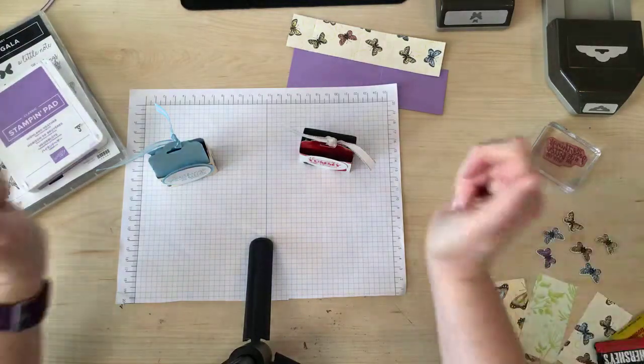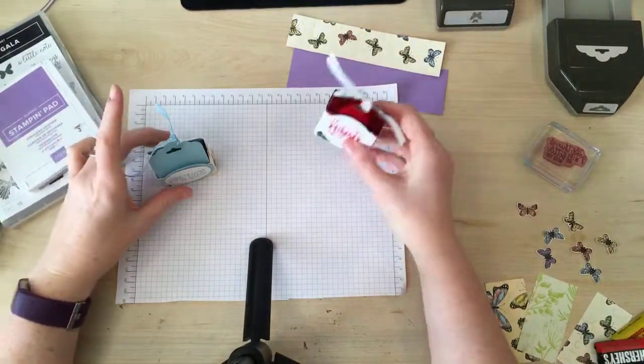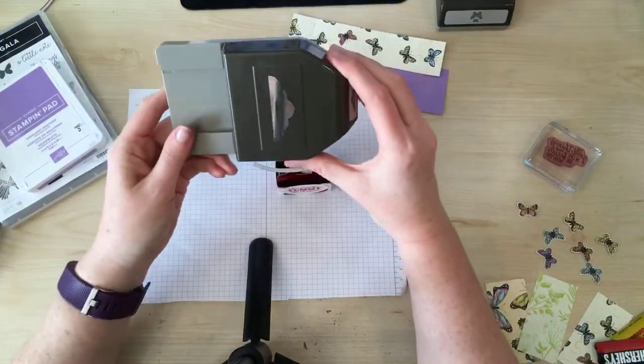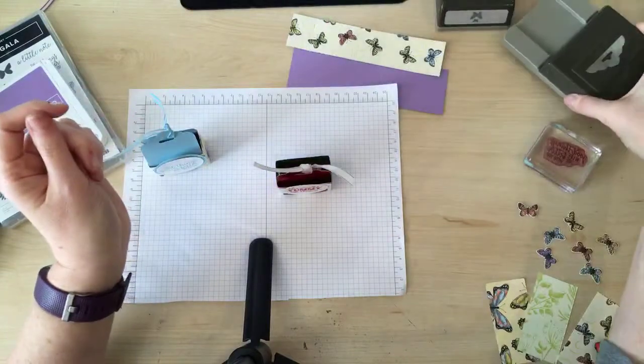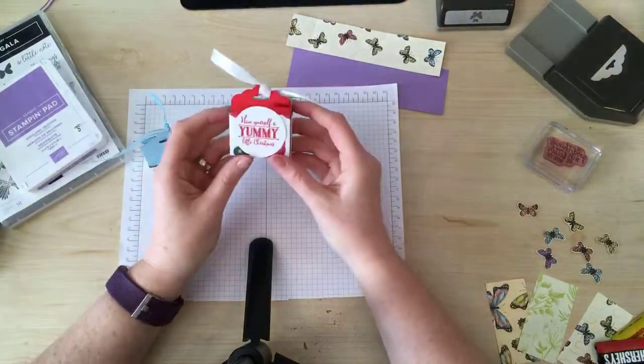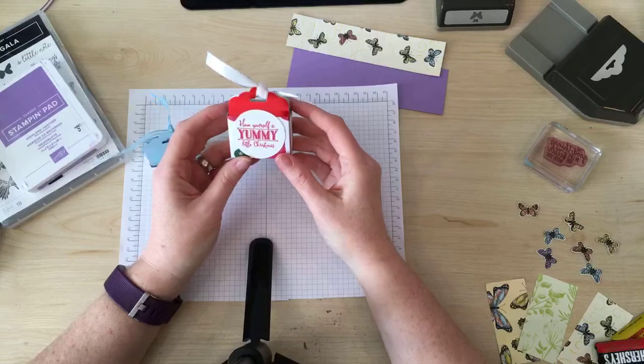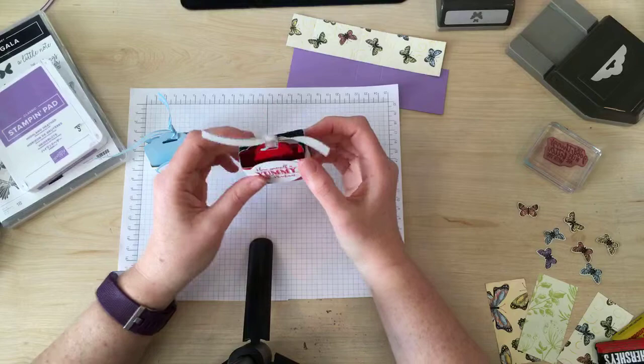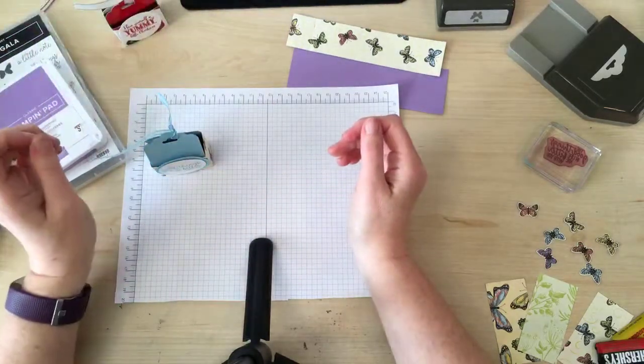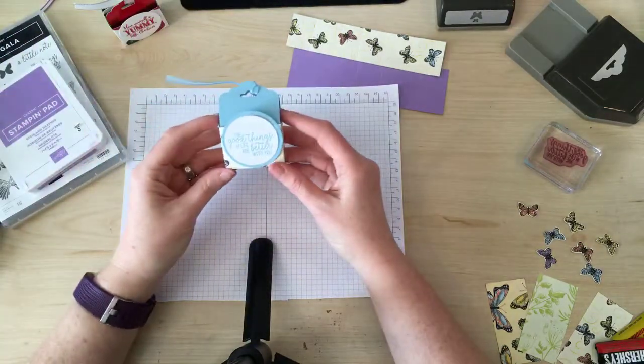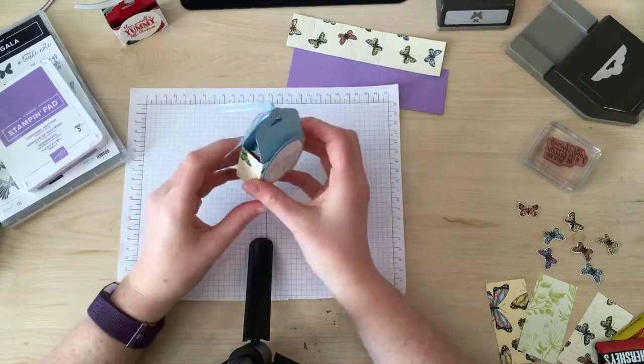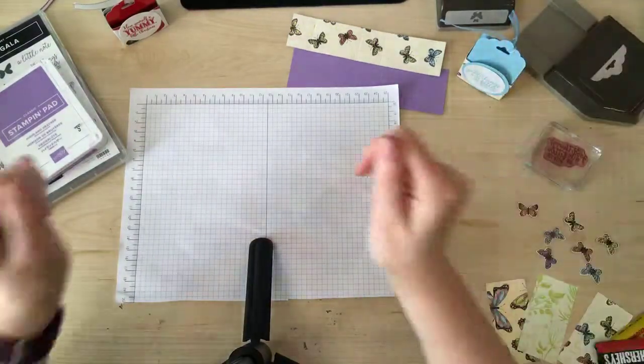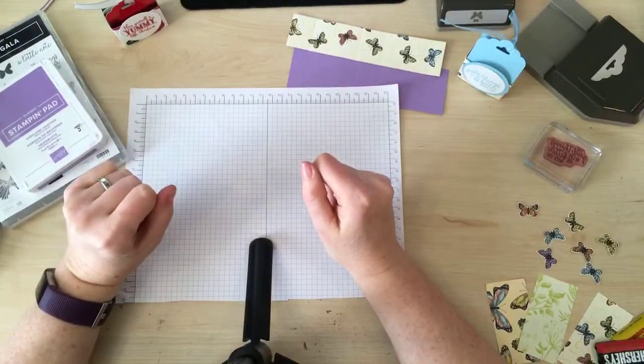I'm coming to you live because I want to show you how to make this really cool scalloped tag topper treat holder. Now, that is a tongue twister if I've ever heard one. I made a bunch of these for a Christmas craft fair that I was involved in last December, which was a lot of fun, and I decided I'm going to update the design with some spring products. Here's what the finished product looks like today, and I'm going to show you how to make this with some of our current Stampin' Up! products.